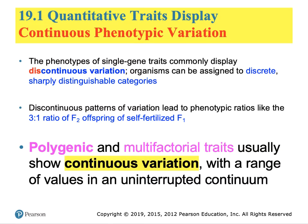We learned with Mendelian genetics that there are discrete buckets into which phenotypes can fall based on genotypes. Mendel was instrumental in choosing characteristics that he knew had discrete outcomes before he conducted his experiments. In genetics, variation of that type is called discontinuous — it's like a bar chart. The 3-to-1 ratios in the F2 that Mendel obtained, beginning with pure-breeding parents, is an example of discontinuous trait variation.